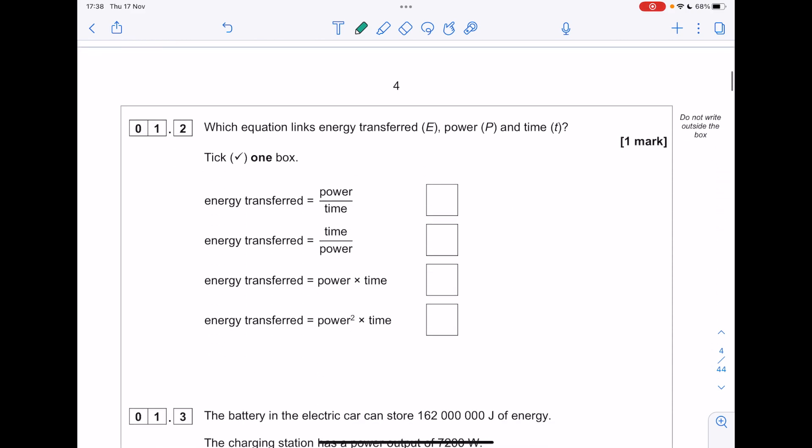Which equation links energy transferred power and time? I like to use formula triangles to help me. We play tennis. Remember, work done and energy are the same. So our equation is in terms of energy. We cover what we're after. So it's power times time.